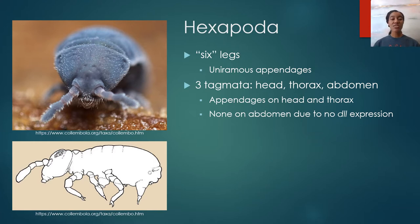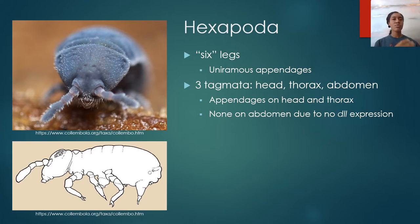All of their appendages are uniramus. This is not like what we saw in crustaceans, because in crustaceans they had biramus appendages, or sometimes a mix of biramus and uniramus appendages. In hexapods, all of their appendages are uniramus.